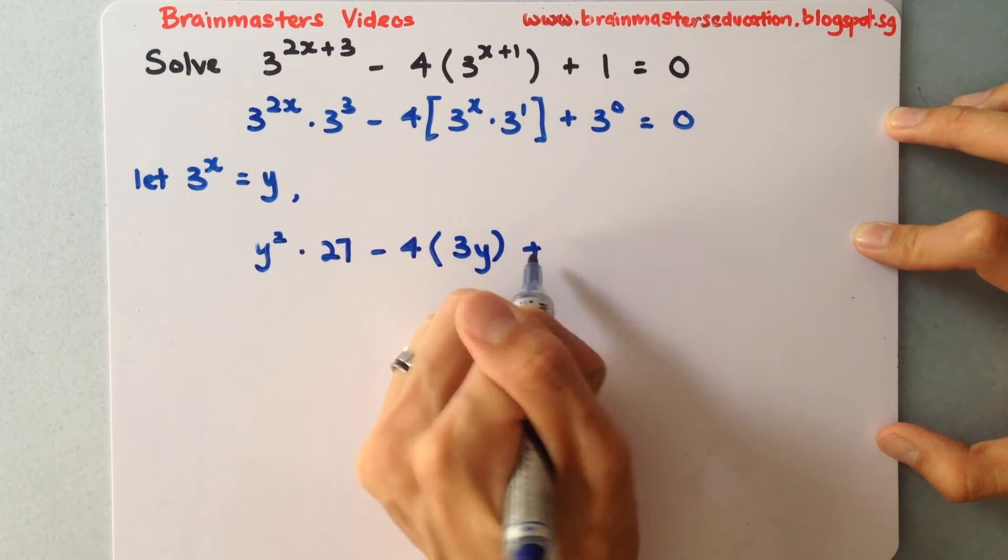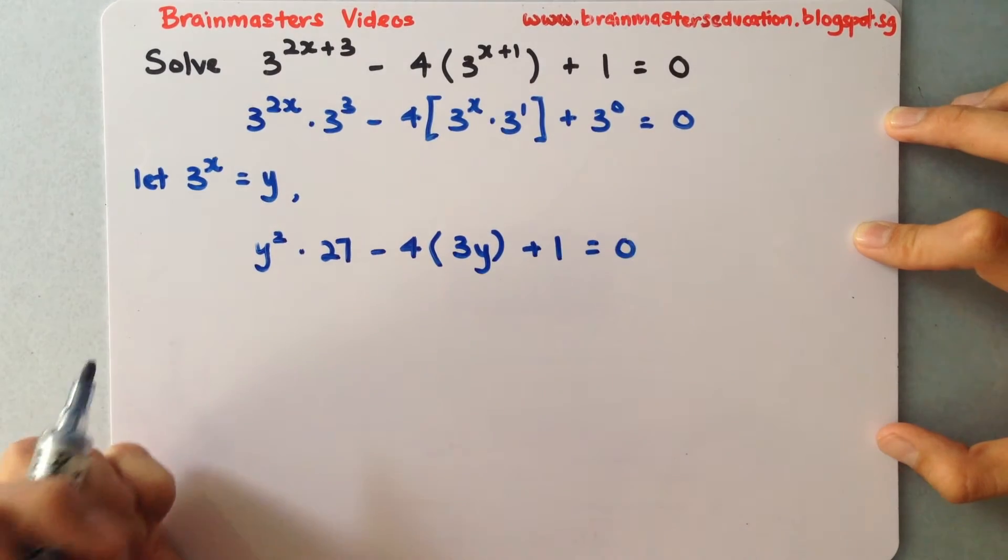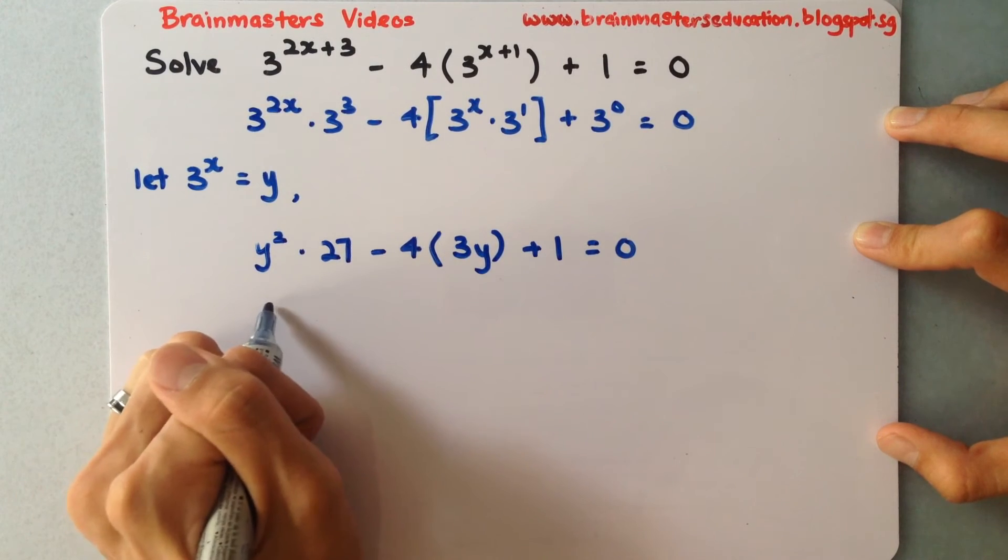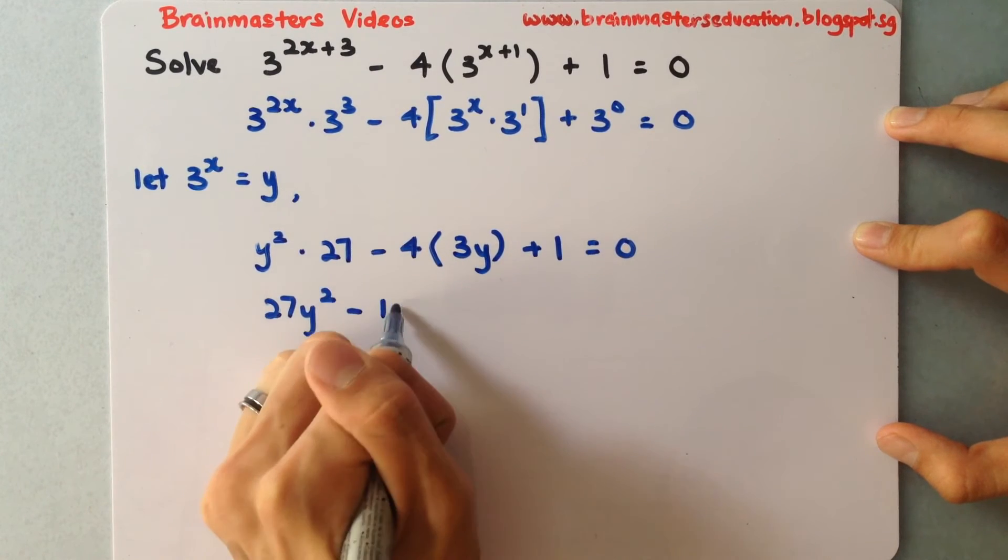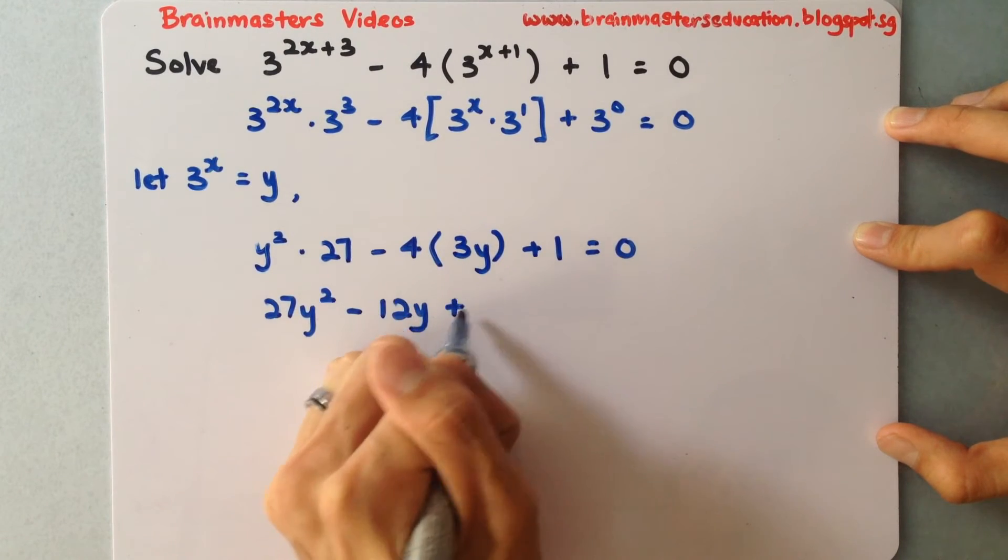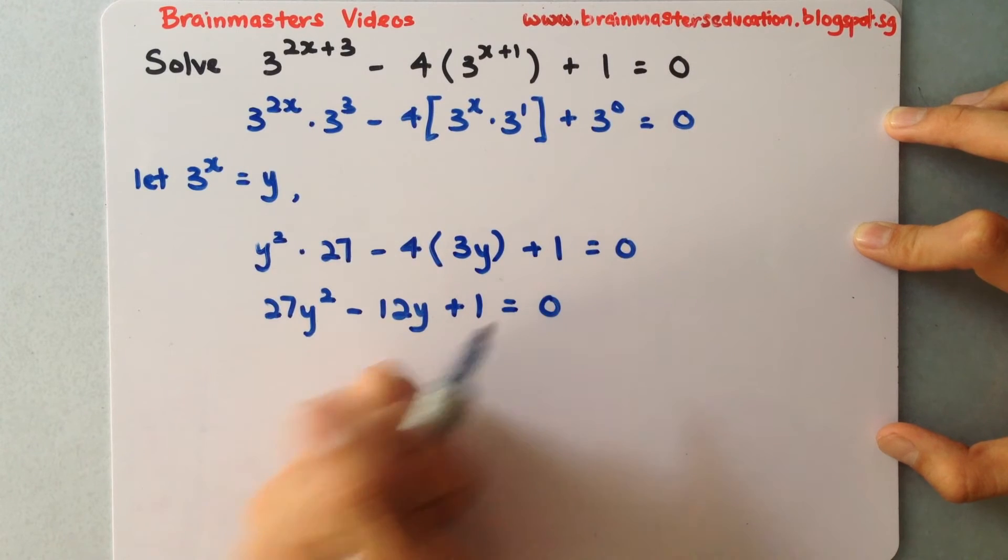Now I have 3y. This remains as plus 1, equals 0. Simplifying this gives the equation 27y squared minus 12y plus 1 equals 0.